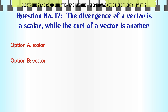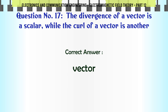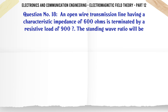The divergence of a vector is a scalar while the curl of a vector is another: A. Scalar, B. Vector, C. Unit vector, D. None of the above. The correct answer is Vector.